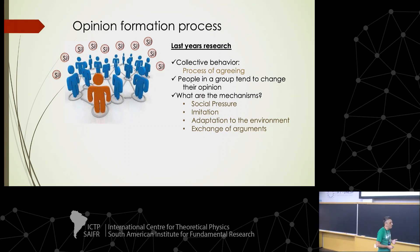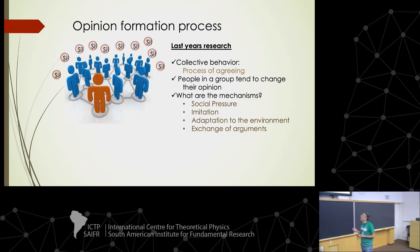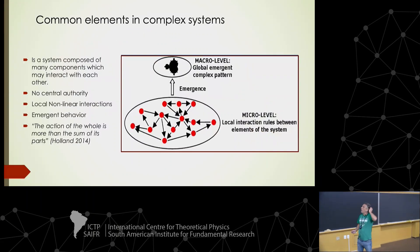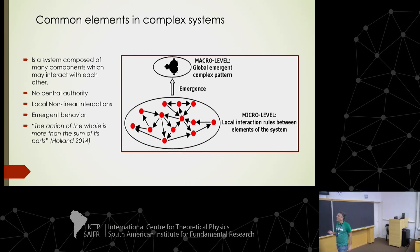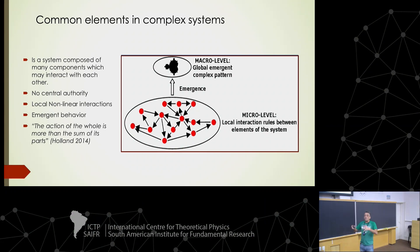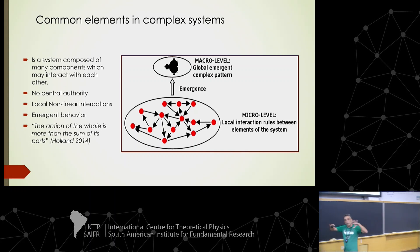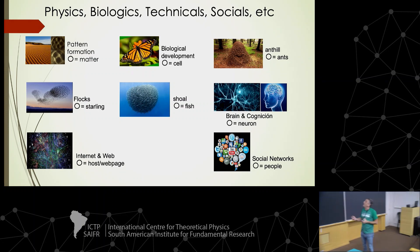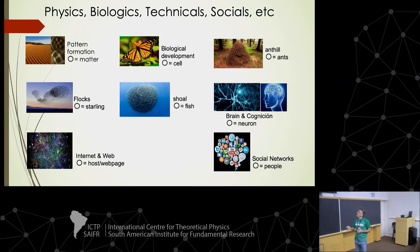The mechanism by which people change their opinion on a certain subject could be different — that is something we are going to explore later. So, what are the common elements in complex systems? A complex system is composed of many components that may interact with each other; there is no central authority; there are local non-linear interactions; there is emergent behavior. This is the common framework for these different problems.